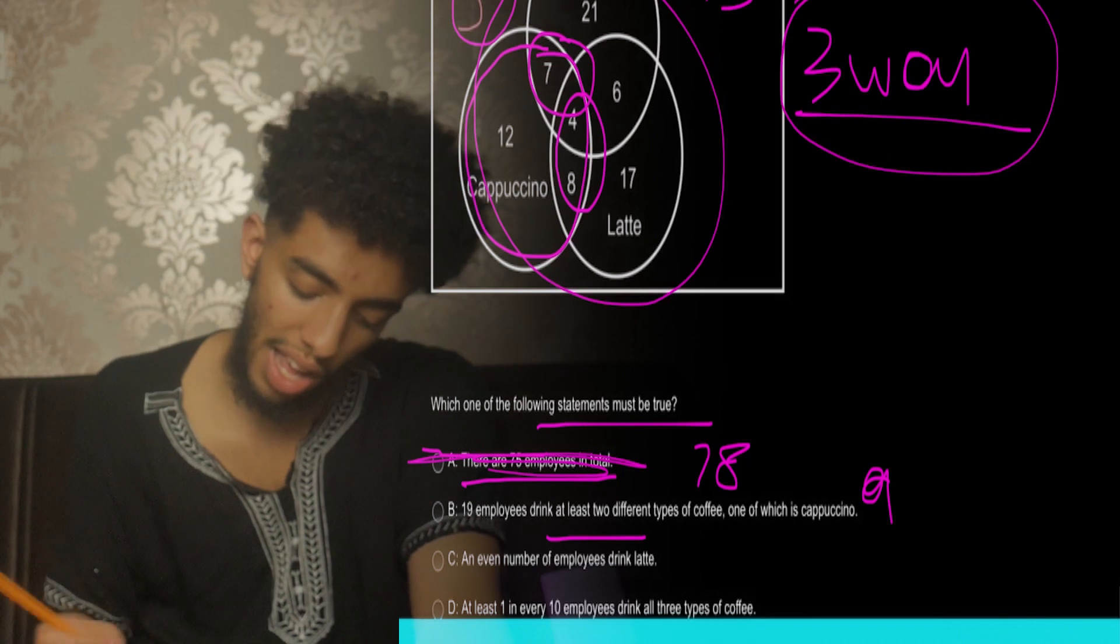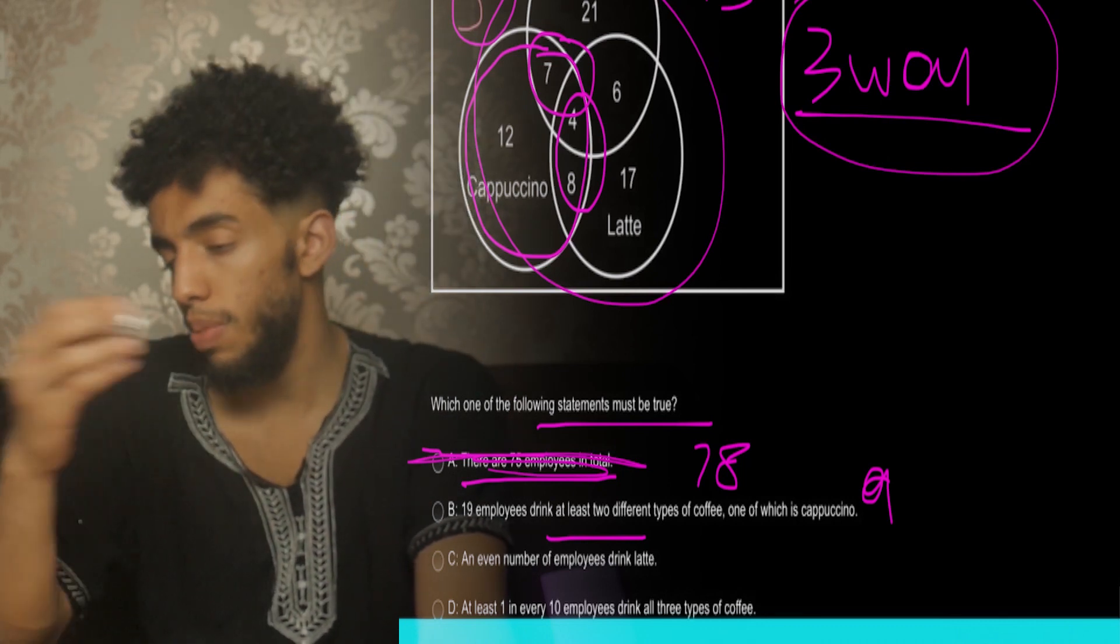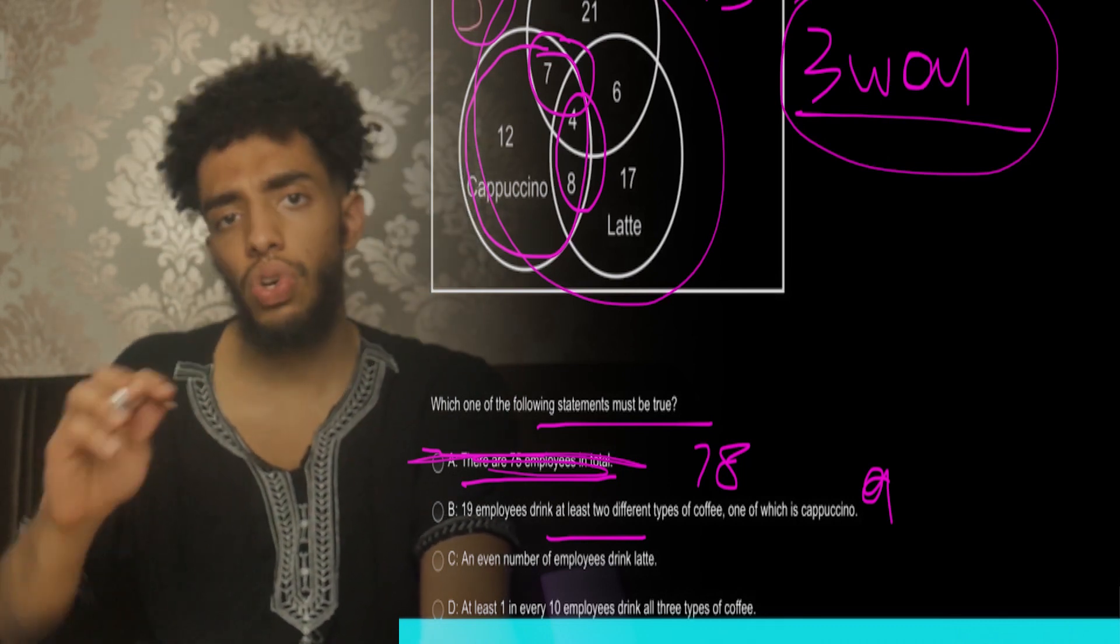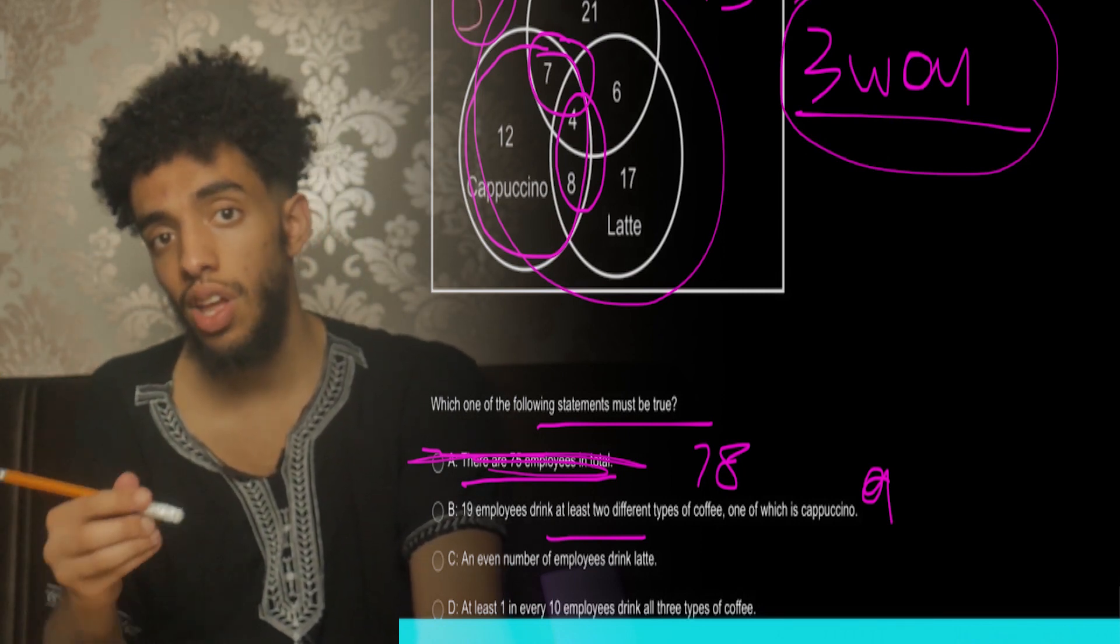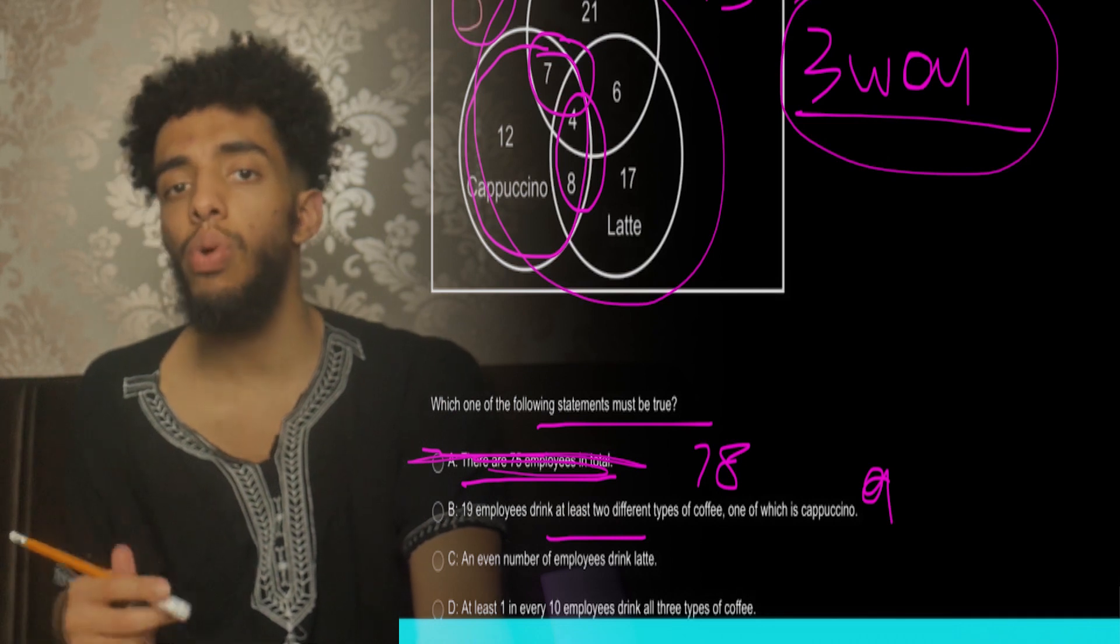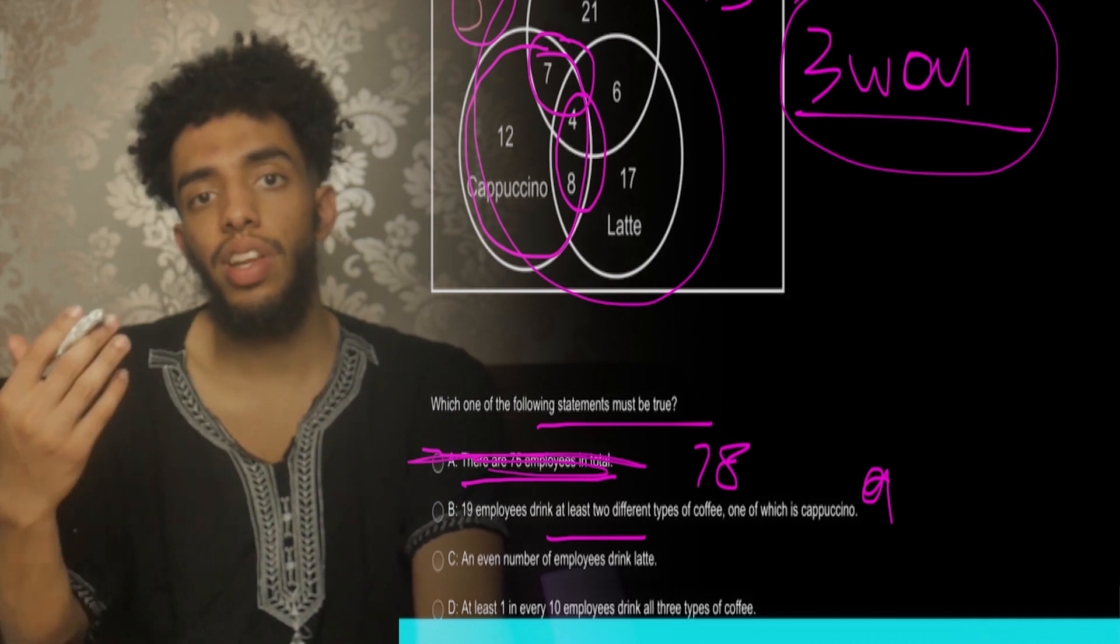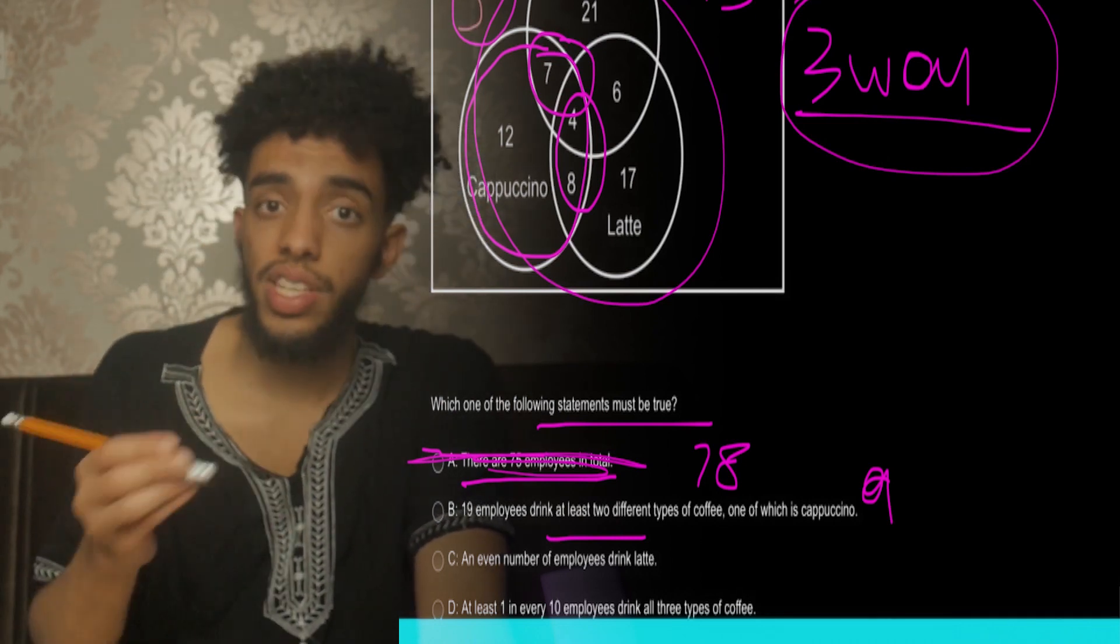Once you get a correct answer on this section and you've ensured that it's correct by clearly reading it, I would just say skip past it or skip onto the next question. Don't try to check if all the other ones are correct. I wouldn't advise that, especially if you've practiced more than enough questions and you know that you're consecutively getting those questions right. But for the sake of the video, I will go through the other questions.